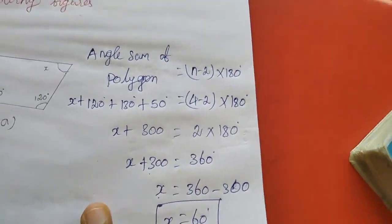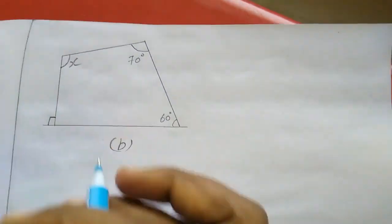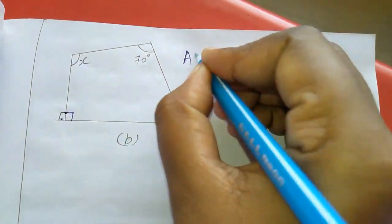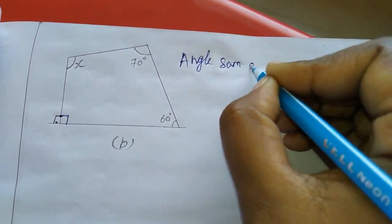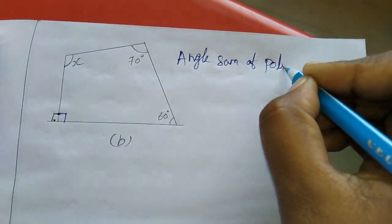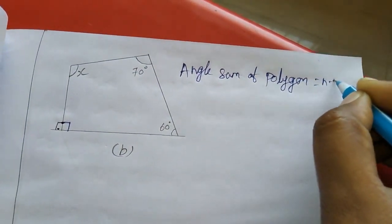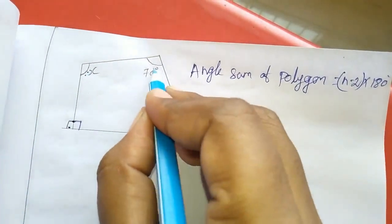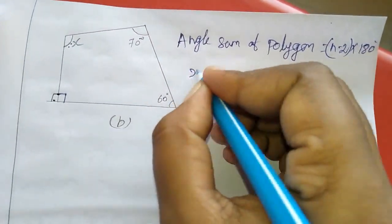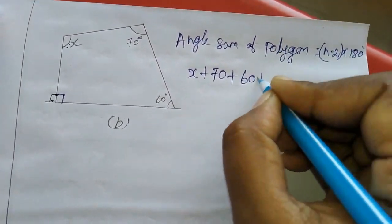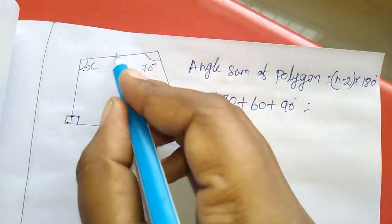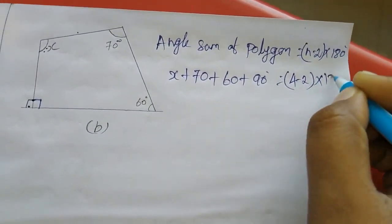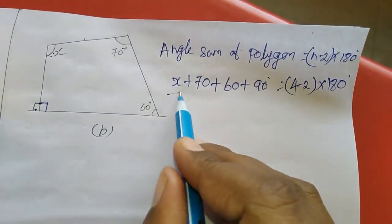Now moving to sum 6b. Here the angles include 90 degrees. Using the angle sum property: angle sum of polygon equals n minus 2 into 180 degrees. Adding all the angles: x plus 70 plus 60 plus 90 equals 4 minus 2 into 180 degrees. After this, simplify and find out the value of x.